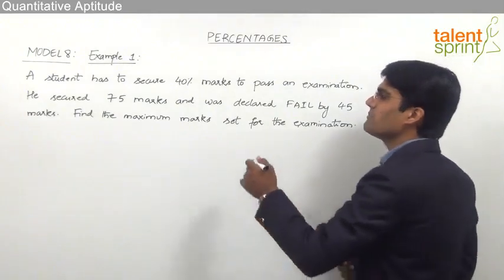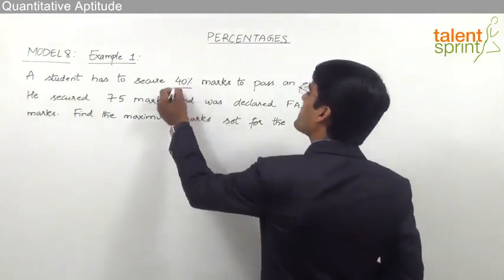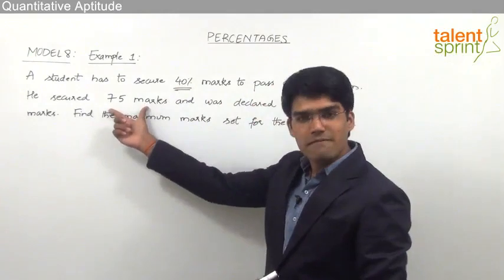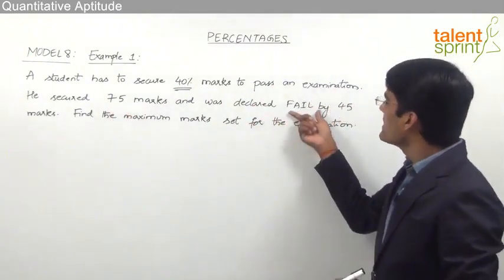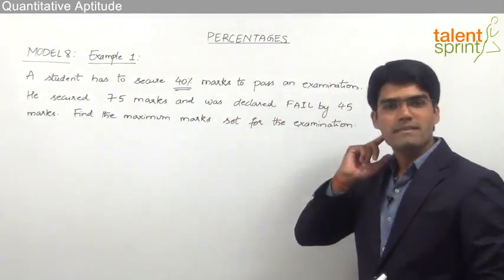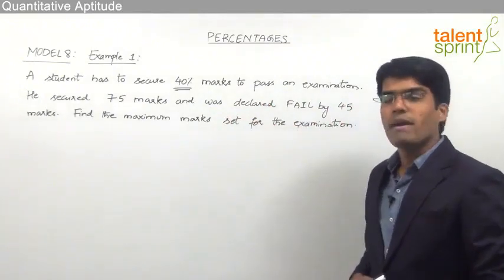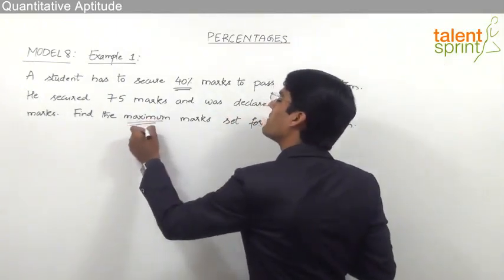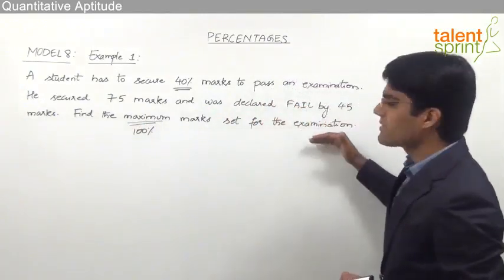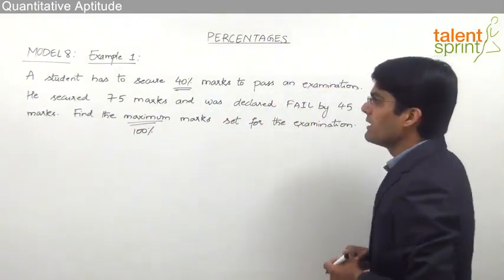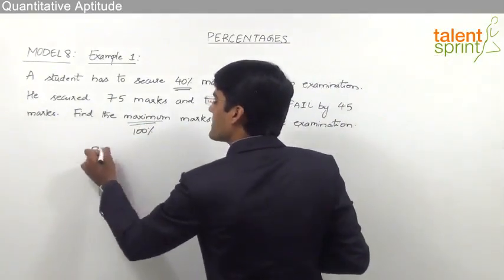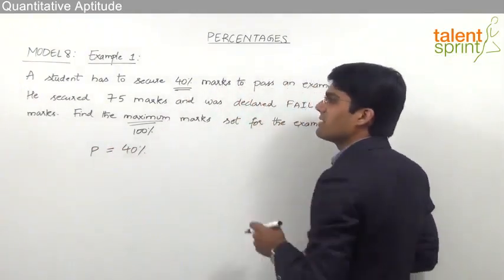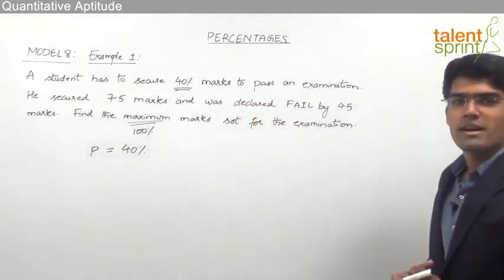A student must get 40% marks to pass the exam. He has scored 75 marks but still was declared fail by 45 marks. We are supposed to find out the maximum marks — that is nothing but 100% of the marks that can be scored. The pass percentage is 40, because a student has to get 40% marks to pass.